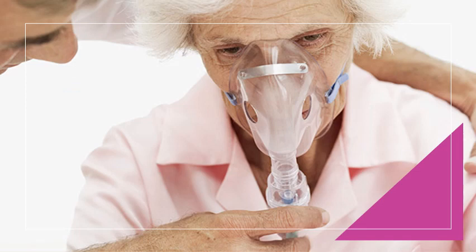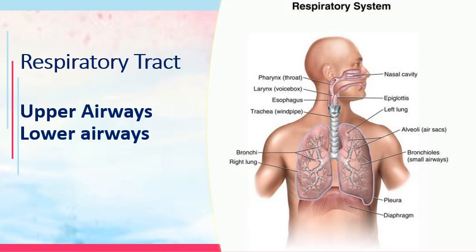Now we'll be talking about respiratory function. This is an image of a typical patient with chronic obstructive pulmonary disease. As we go along, we hope to understand how to care for this patient. Prior to discussing specific diseases, we will review the anatomy of the respiratory tract and the assessment findings pertinent to this system. This system is important for maintaining adequate oxygenation and tissue perfusion. The source of the oxygen our body cells need is from the air that we breathe.